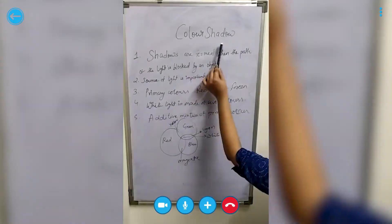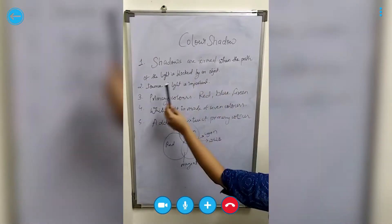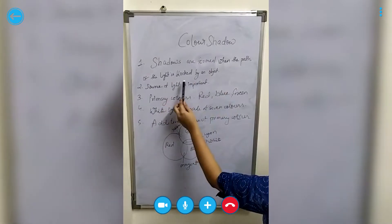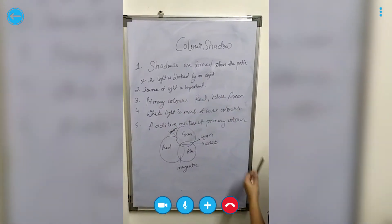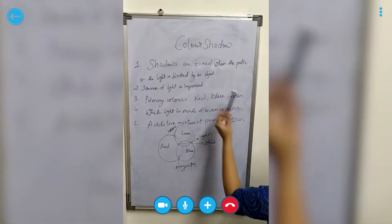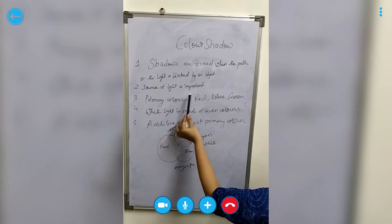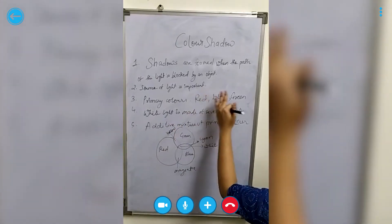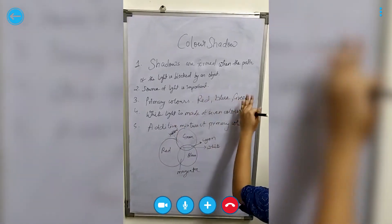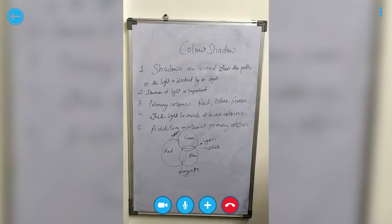Color Shadow: Shadows are formed when the path of light is blocked by an object. So for creating shadows, a source of light is very important and also an opaque object is required for casting the shadow.